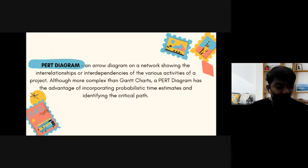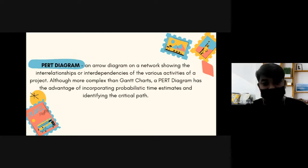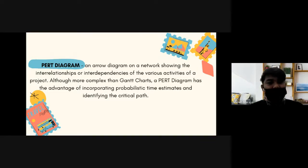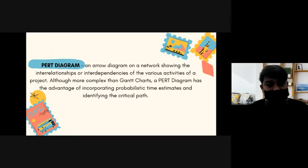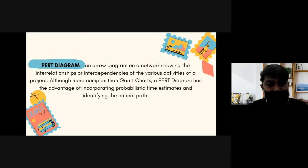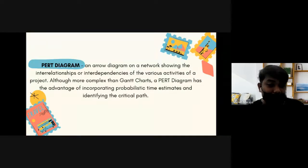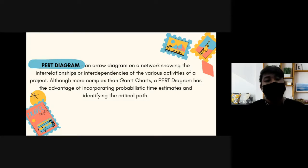In a Gantt chart, we just use a bar chart. In PERT, we use a diagram — an arrow diagram. Sometimes, a PERT diagram can look like a fish. It is more complex because it is more detailed and gives more information about possible time, what activities, how many days are estimated for each activity, where activities are connected, and what the relationship is between activities.